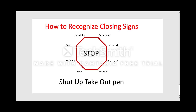Another closing sign is future talk — they start talking as if they already have the product. They'll say things like, 'So when I get this, what's the cancellation?' or 'If I got this, how would it all work?' They're already speaking as if they own it. You should immediately act on this and move them to the next step of the conversation — don't prolong it or you'll lose the sale.